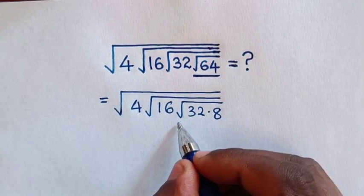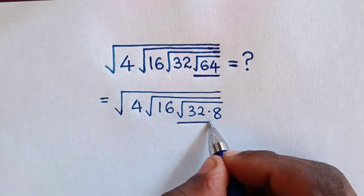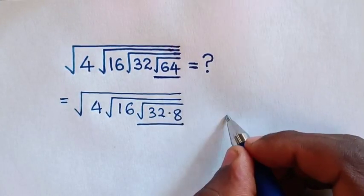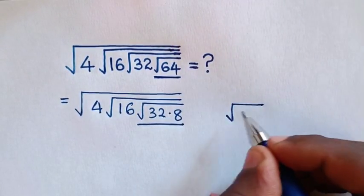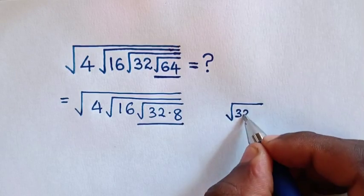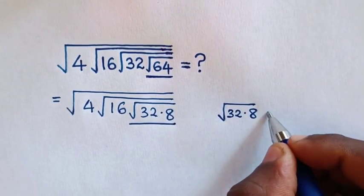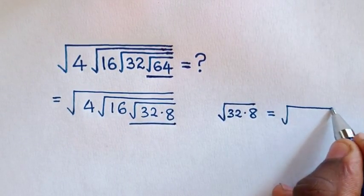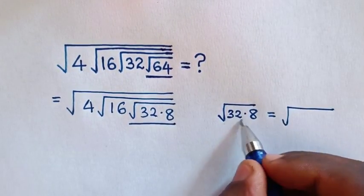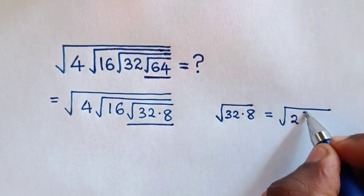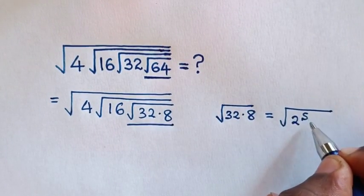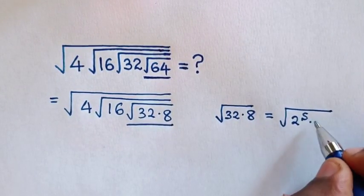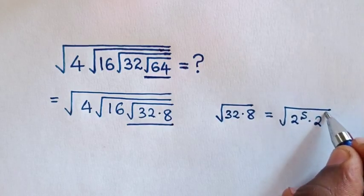In the next step we'll deal with square root of 32 times 8. So square root of 32 times 8 — square root of 32 is the same as 2 to the power of 5, then times 8, which is the same as 2 to the power of 3.